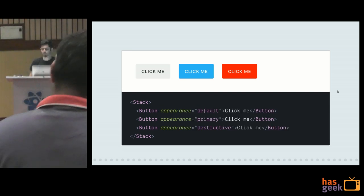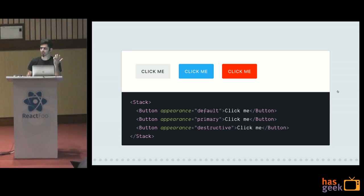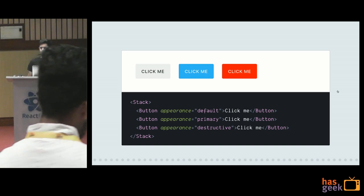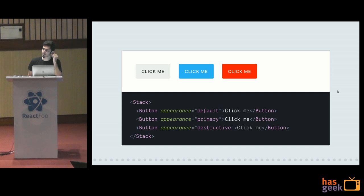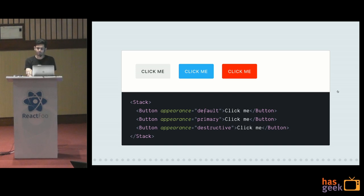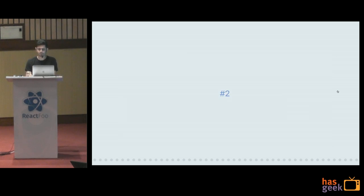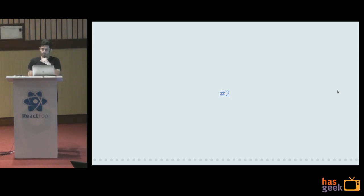Instead of separate boolean props, let's just call it `appearance`. You can call it multiple things — I've seen people call it `type`, which can get interesting because there's an HTML attribute also called type. So I like `appearance`. Appearance is default, primary, destructive — the whole list. That's tip number one.